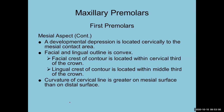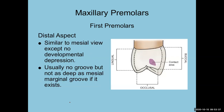That developmental depression is located cervically to the mesial contact area, closer to the CEJ. The facial and lingual outline is convex. The facial crest of curvature is in the cervical third of the crown, and the lingual crest of curvature is in the middle third — unlike anterior teeth where both are in the cervical third. The curvature of the cervical line is greater on the mesial than on the distal, as is true for all teeth.